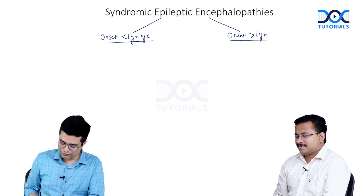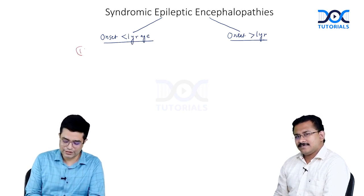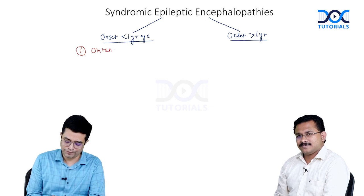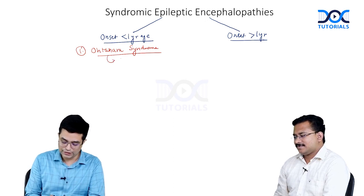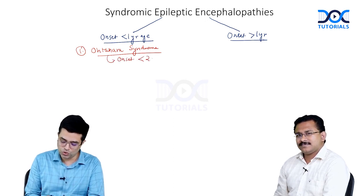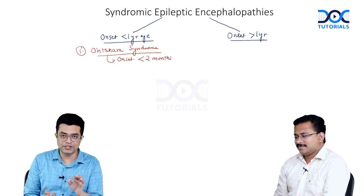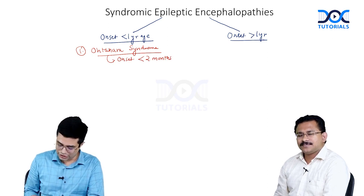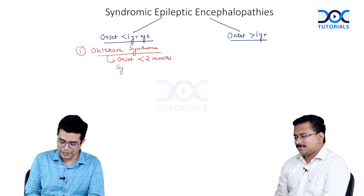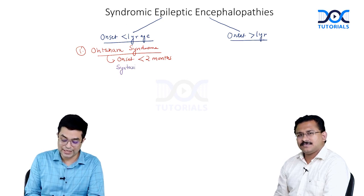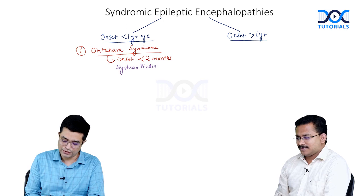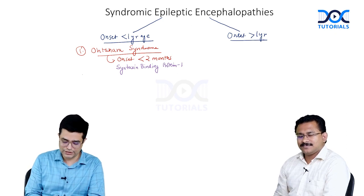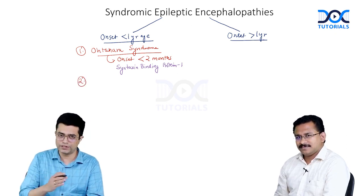If onset is before one year of age, the first syndrome is Ohtahara syndrome. There are two key points: onset of Ohtahara syndrome is before two months of age, so it always manifests with seizures and encephalopathy in the first two months of life. Secondly, Ohtahara syndrome is commonly associated with a mutation in the protein coding gene syntaxin binding protein type 1 (STXBP1). These children have poor prognosis with significant developmental issues along with seizures.